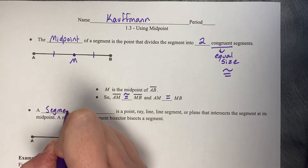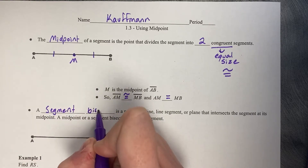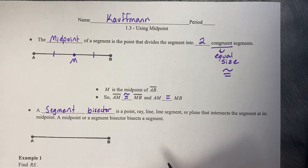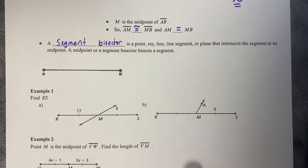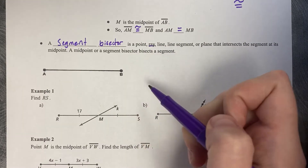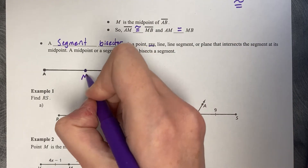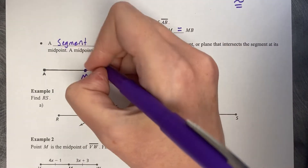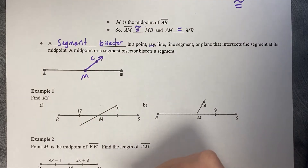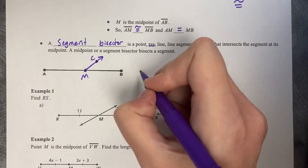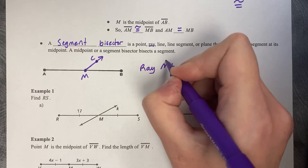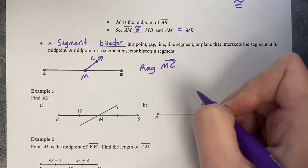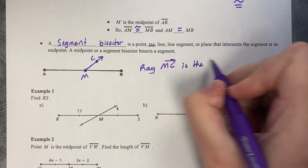A segment bisector is a point, ray, line, segment, or plane that intersects the segment at its midpoint. A midpoint or a segment bisector bisects a segment. If we just want to pick one of these, let's show an example of a ray. I'm going to call it M, and a ray goes in one direction infinitely. So I'll put another letter C on there. We can say that ray MC, with a little arrow on top, is the segment bisector.